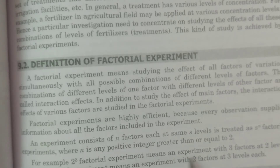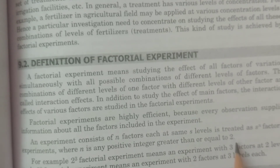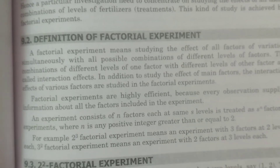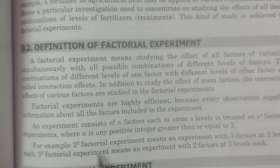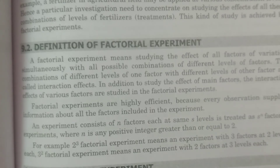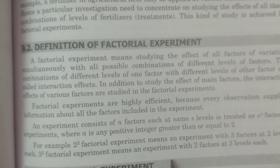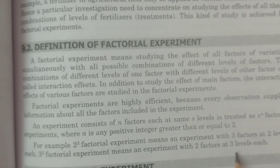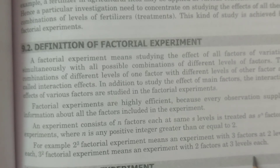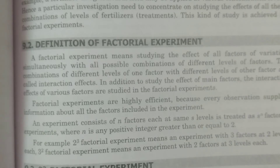N is a positive integer greater than or equal to 2. For example, a 2 cube factorial experiment means 3 factors at 2 levels each. And a 3 square factorial experiment means 2 factors at each of 3 levels. This is the definition of factorial experiment.